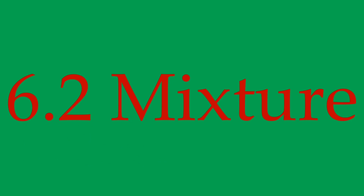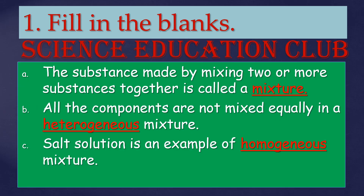Mixture. Fill in the blanks. The substance made by mixing two or more substances together is called a mixture. All the components are not mixed equally in a heterogeneous mixture. Salt solution is an example of a homogeneous mixture.